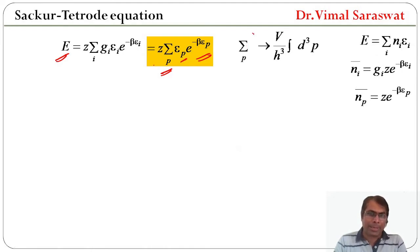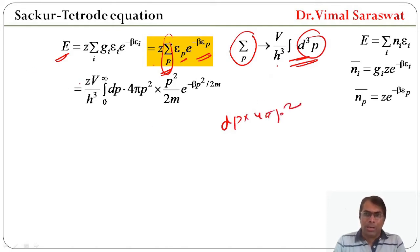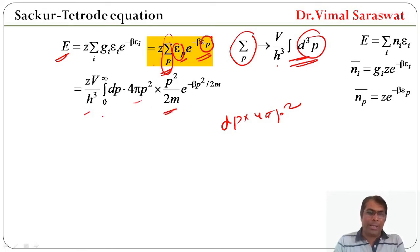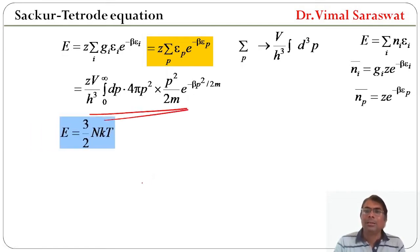Now we replace sigma_p by (V / h^3) * integral d^3p, and d^3p by dp * 4*pi*p^2. So E equals z * (V / h^3) * integral from 0 to infinity dp * 4*pi*p^2 * (p^2 / 2m) * e^(-beta * p^2 / (2m)). On solving this equation we get E equals (3/2) * N * k * T.